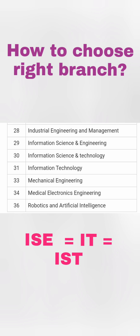Information Science and Engineering, Information Science and Technology, and Information Technology are all IT branches — just different names in different colleges. There is no real difference between them; whichever college you get, it is the same branch. Industrial Engineering and Management is for students interested in manufacturing, similar to Mechanical Engineering. Medical Electronics is a specialized branch for students with a bio plus electronics background. Robotics and Artificial Intelligence is a mix of computer, mechatronics, and electronics — available in a few colleges.